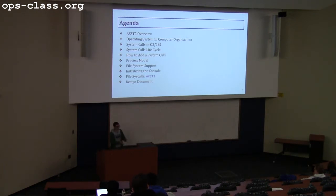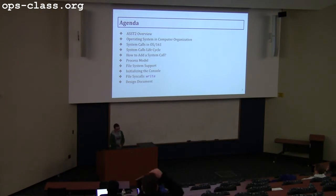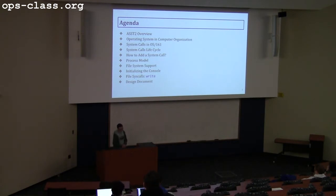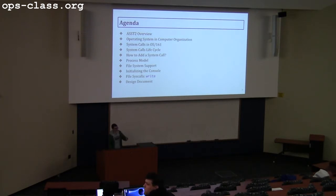We're going to go through the process model, and then we're going to talk about file system support, initializing the console, which is Assignment 2.1, and then we're going to talk about the first syscall, file syscall write. Previously we started with open, close, read, write, but this year because you need the console running by this Friday, you should have write at least done for that. We're going to go over write if time allows, and also I'm going to talk about the design document. You only need one, starting Assignment 2.